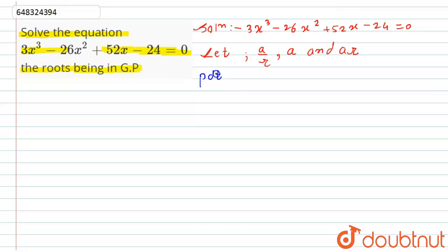to say the product of roots can be given by a/r × a × ar. This should be equals to -d/a. So what is -d? The constant term is the value of d here, which is -24. So -(-24) divided by a, which is 3, equals 24/3. From here if you see, r and r get cancelled.